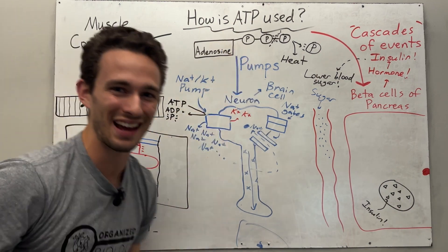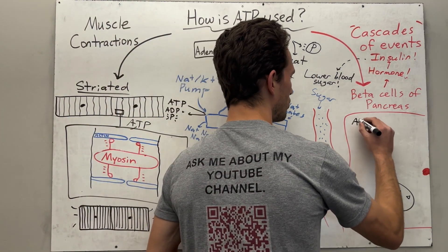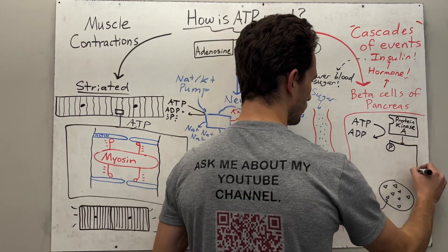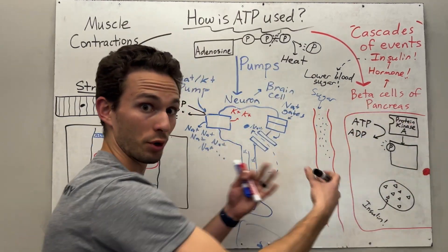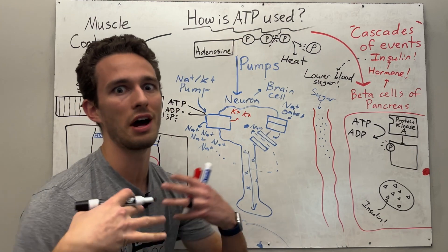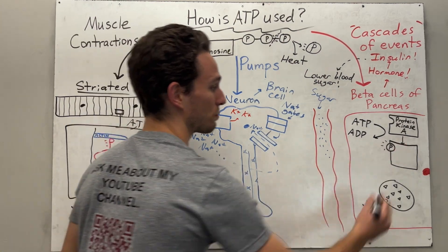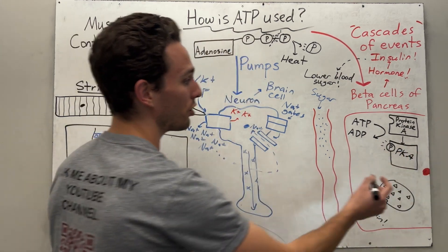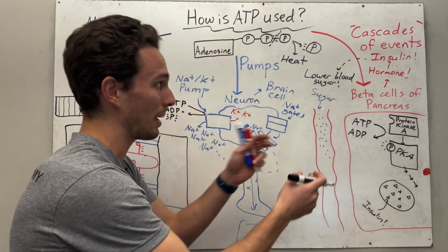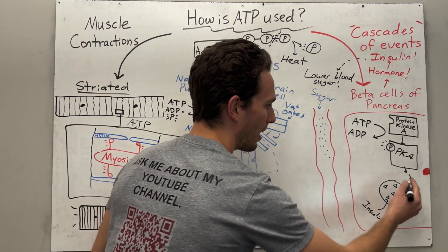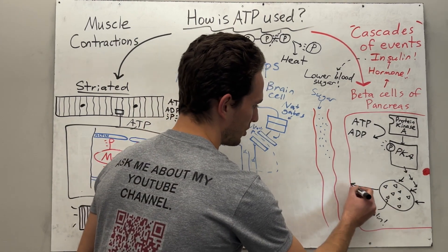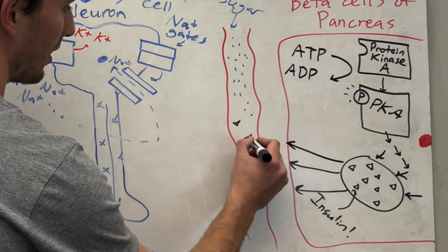ATP will be used to activate what's called protein kinase A. When the phosphate from cleaved ATP attaches to this protein kinase, stuff moves and happens. Protein kinase A goes through a variety of different steps called a cascade, and it ends up making molecules appear that will push on those vesicles. When those vesicles get pushed, they go out of the membrane, thus releasing insulin into the bloodstream.